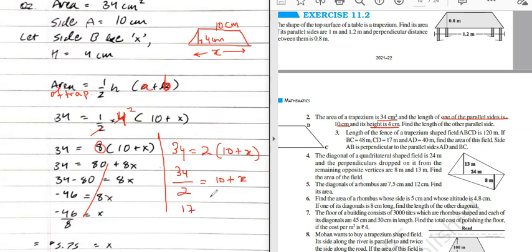So you get 17. You shift 10 to the other side, so x equals 7.